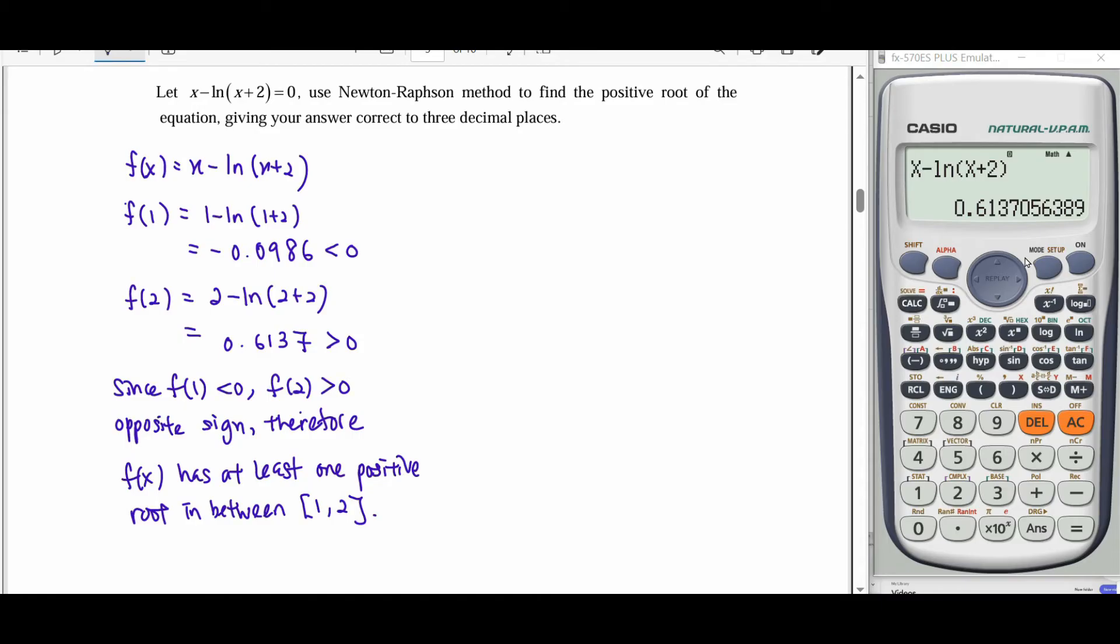So our initial value, we can take 1.5. Since we know that we have a root between 1 and 2, so initial x we take 1.5 in the middle of this interval. Then by using Newton-Raphson method, we need the differential function.